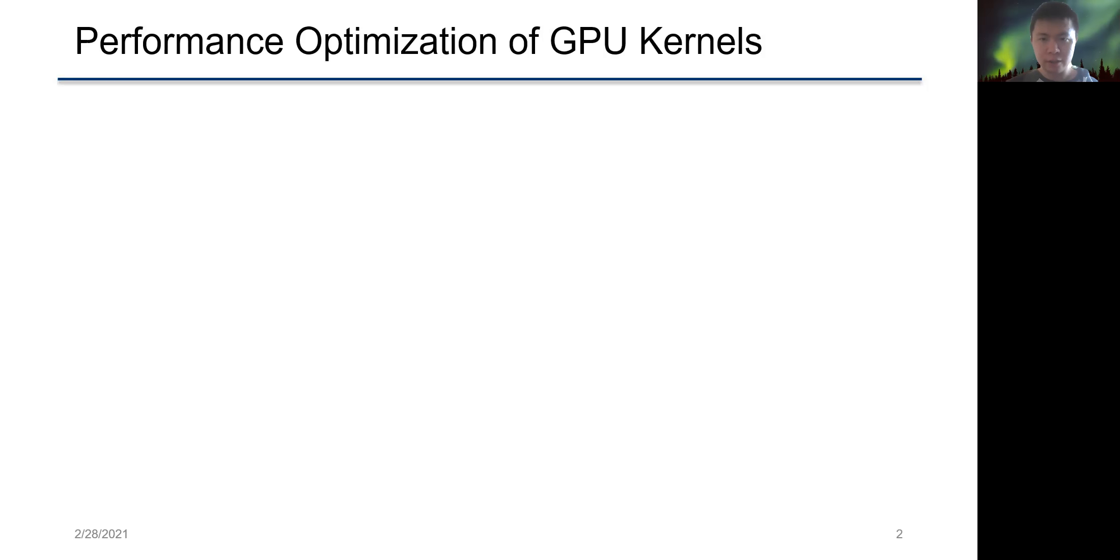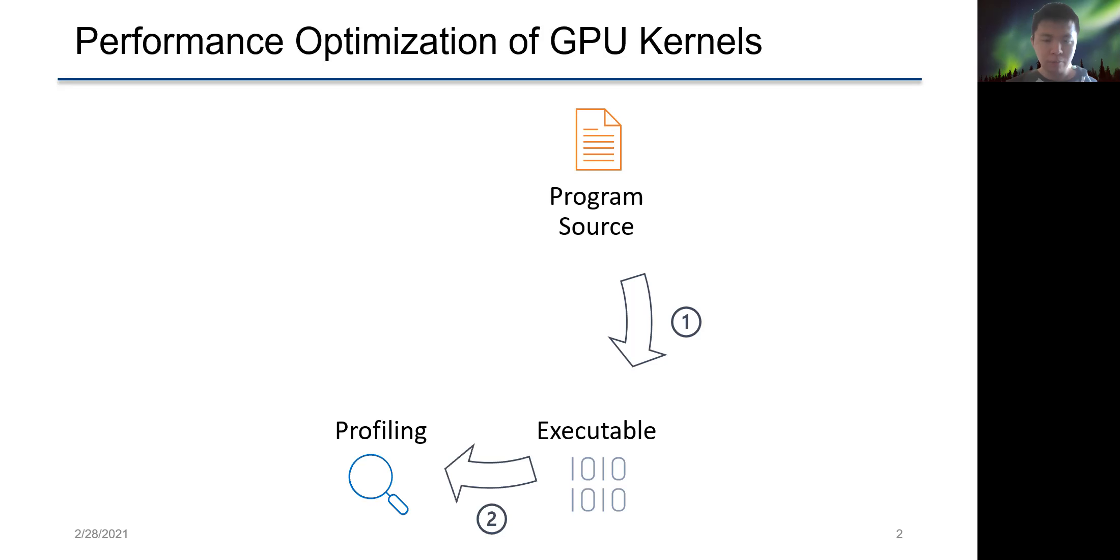Optimizing GPU kernels usually takes the following steps. At first, given some program source code files, we compile them into an executable. Then, using performance tools, we profile its performance and dump a performance report.